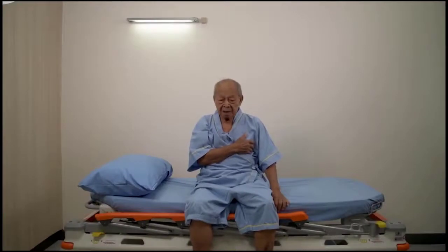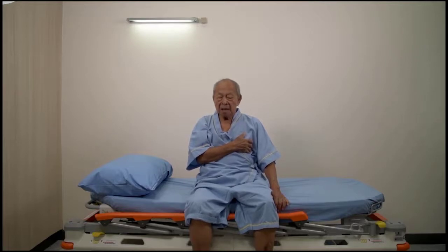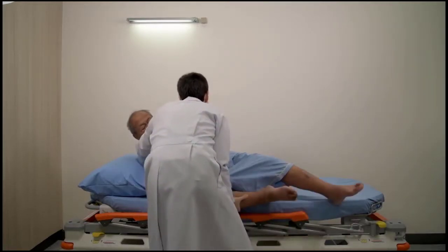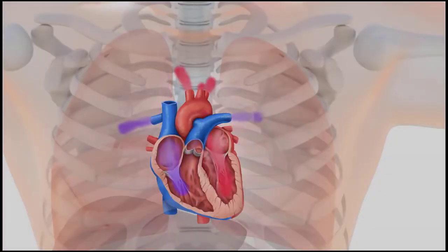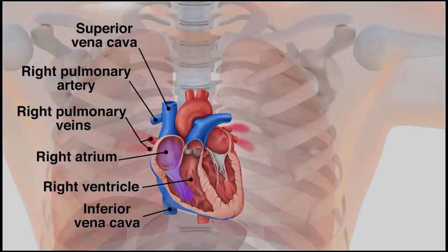In patients with dyspnea or edema, it is essential to estimate the venous pressure and to perform the abdominal jugular reflux test at the bedside. If the venous pressure is elevated or the abdominal jugular reflux test result is abnormal, it is very likely that the patient has heart disease, for example, left or right ventricular failure.